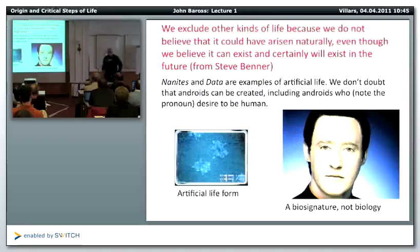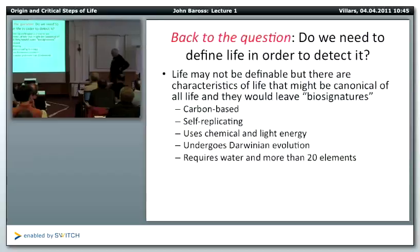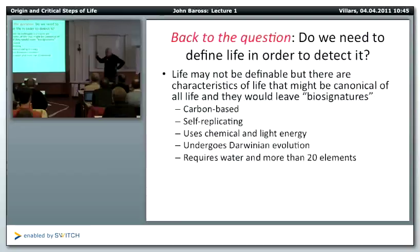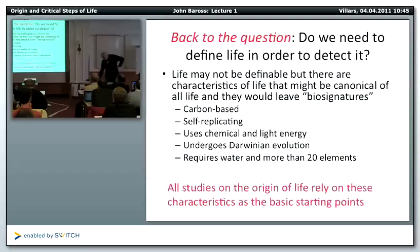So back to the question: do we need to define life in order to detect it? Even Cleland and Chiba seem to understand that there are characteristics of life that allow us to search for it, and it could leave biosignatures. Carbon-based, self-replicating, uses chemical and light energy, undergoes Darwinian evolution, requires water and more than 20 elements — this is what Earth life does. In the process of growing, making energy, and doing metabolism, it produces biosignatures.